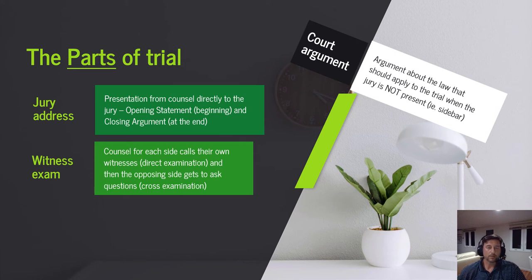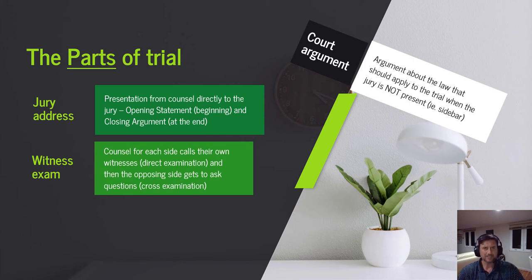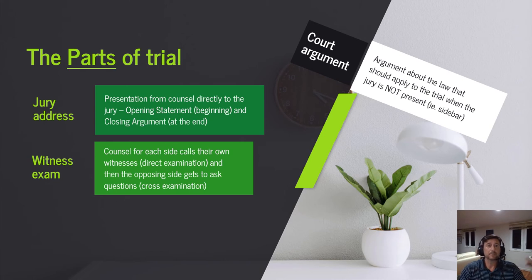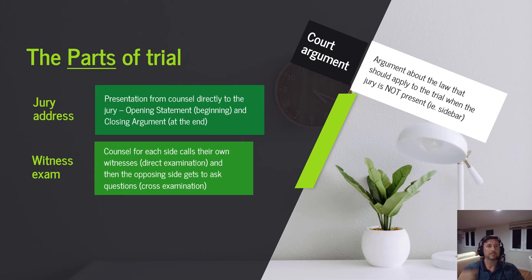The last part involves court argument. Some mock trials have a formal argument where you argue to the trial judge beforehand. Most often it comes up around the rules and customs of trial — when you object to what the other side is doing. You make that argument to the court: 'This is irrelevant,' 'This is unfairly prejudicial,' 'This is improper character evidence.' The other side responds, and you have an argument to the court. So think of trial as: jury address, witness exam, and every once in a while, a court argument — those are your parts of trial.